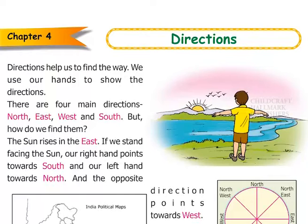Chapter 4: Directions. Directions help us to find the way. We use our hands to show the directions. There are four main directions: north, east, west, and south. But how do we find them?